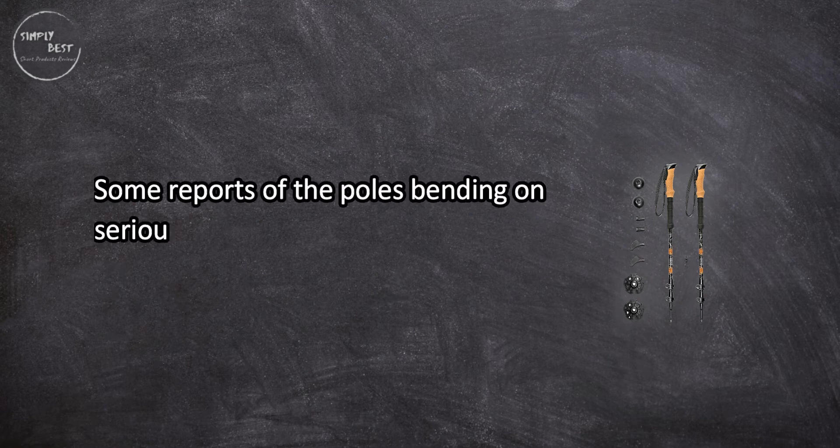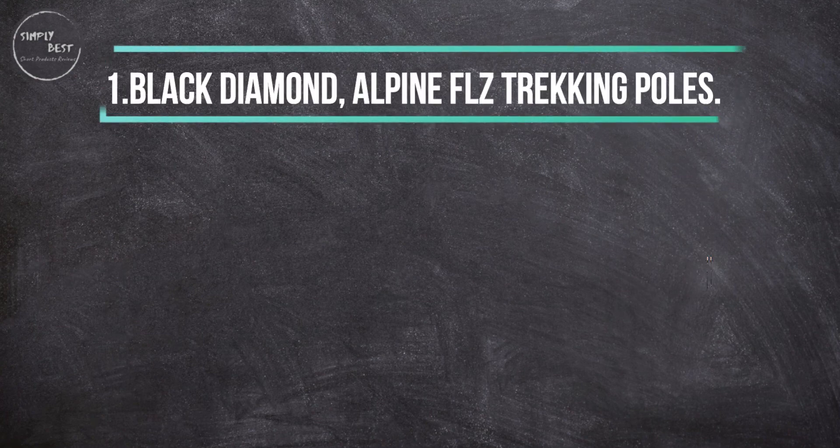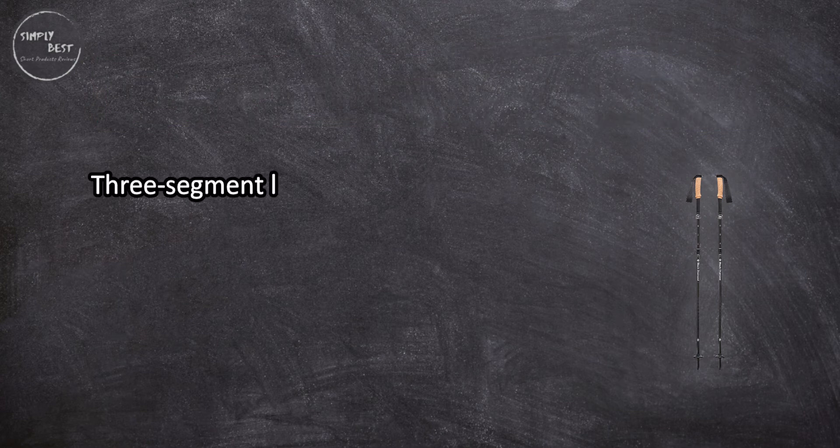At number one: Black Diamond Alpine FLZ Trekking Poles. Three segment locking pole design allows for quick adjustments.